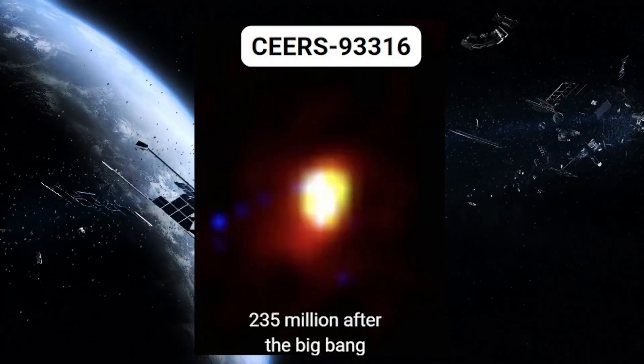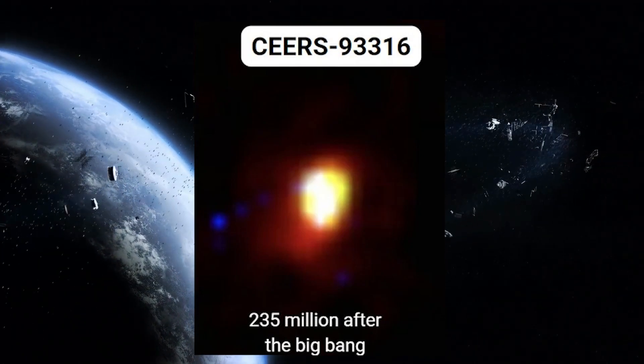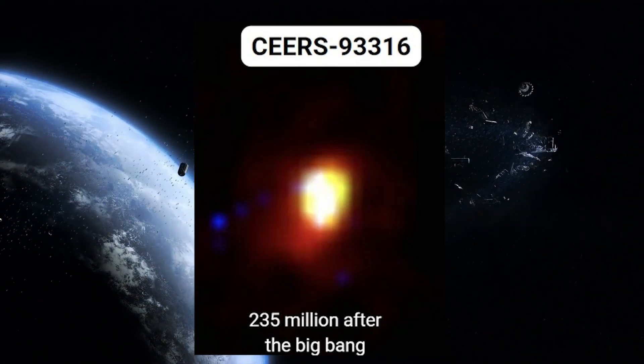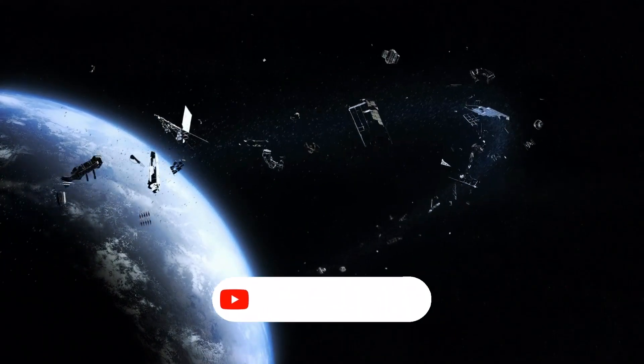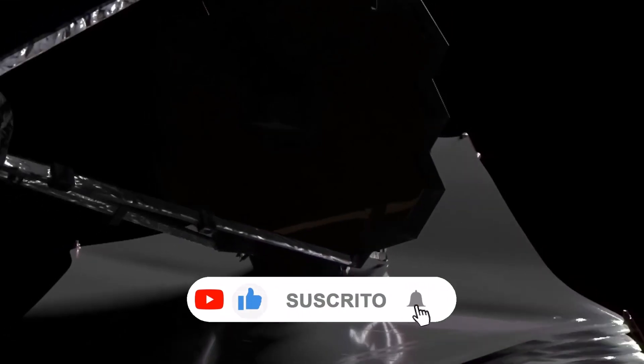One striking example is the galaxy CEERS 93-316, with an impressive redshift of 16.7. This is testimony to the unprecedented technological advances of the legendary James Webb telescope.